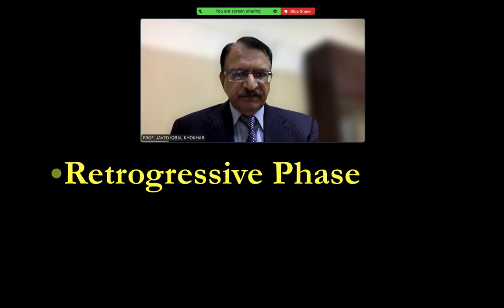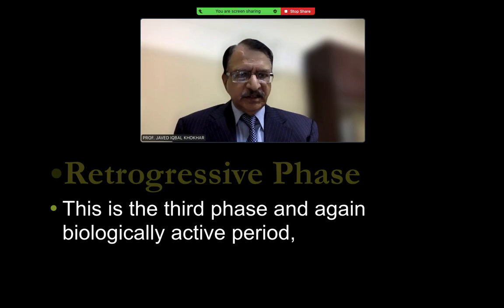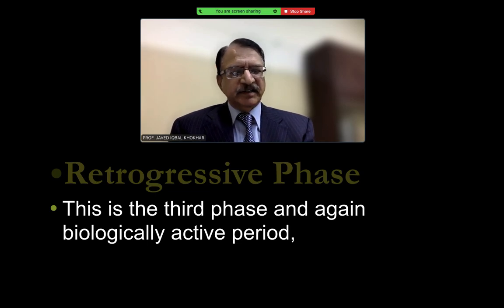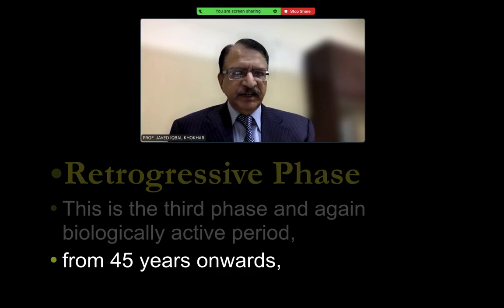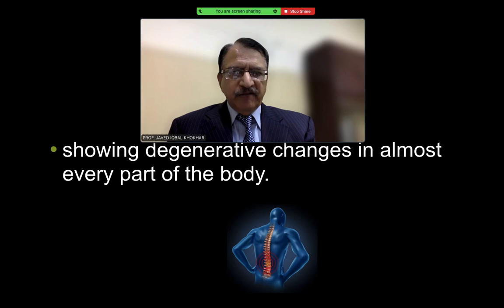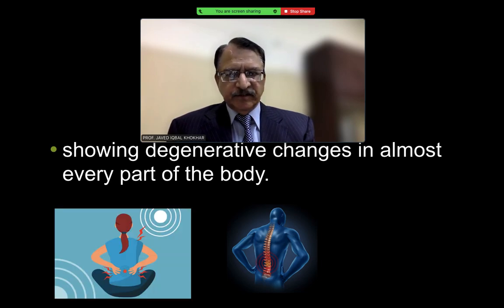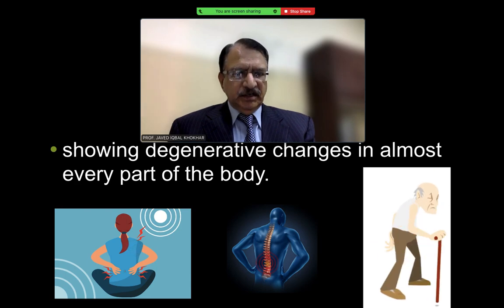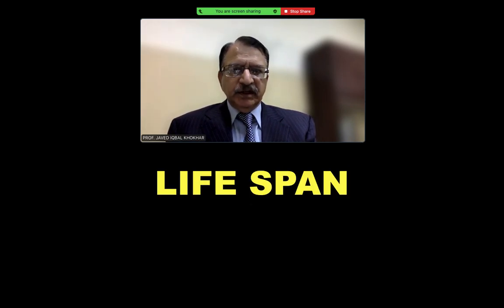Then the retrogressive phase — this is the third phase. It is again biologically active, but it is a degenerative phase, meaning the body is now degenerating. This runs from age 45 onwards. Every part of the body shows degenerative changes, as shown in this image of the spine displaying degenerative changes. The animation shows that degenerative changes make a person old.